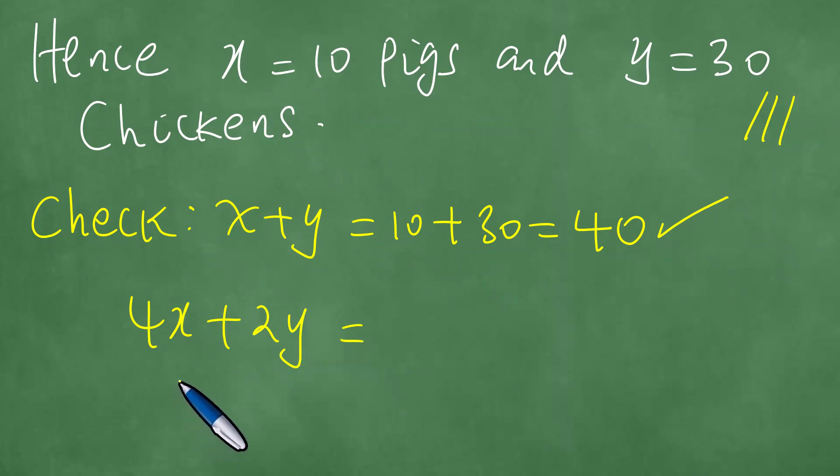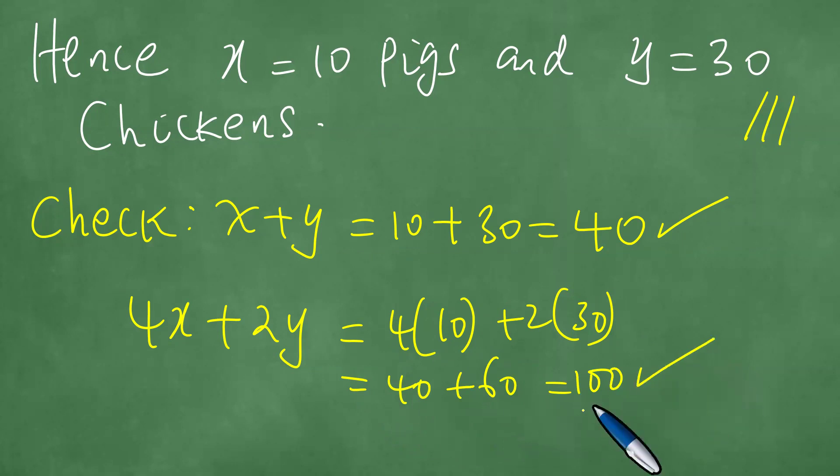But we know that 4X plus 2Y, in other words, the number of legs of all the pigs and chickens was counted as 100 legs by Joseph. So we have 4 times 10 plus 2 times 30, and this is 40 plus 60, which is 100.